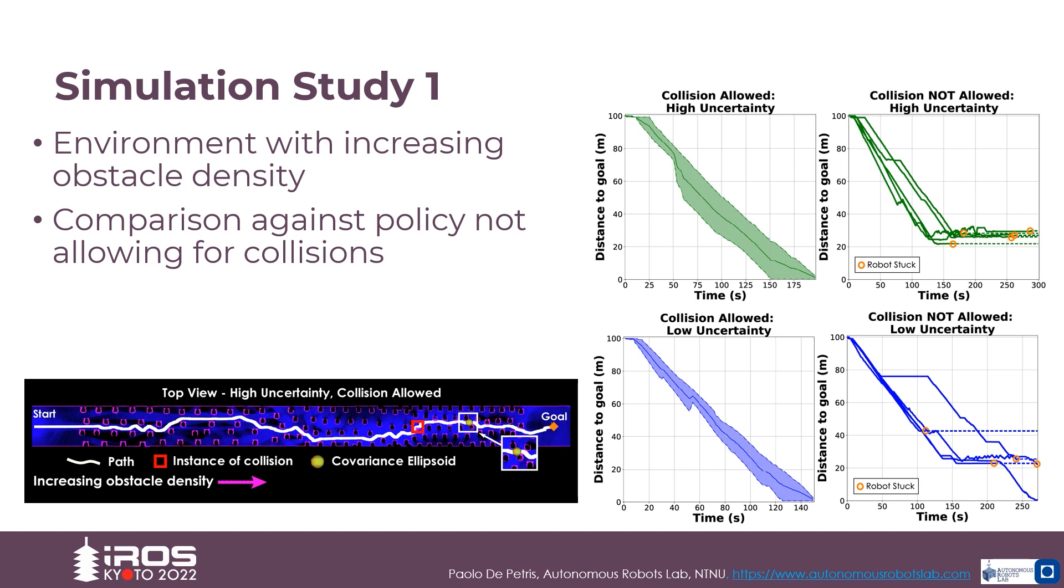The first simulation study evaluates the performance of RAM planner in the presence of varying obstacle density and two different levels of localization uncertainty. The environment consists of three regions with increasing obstacle density. The robot starts outside the least dense region and is commanded to go through the obstacle field to reach a goal on the other side.